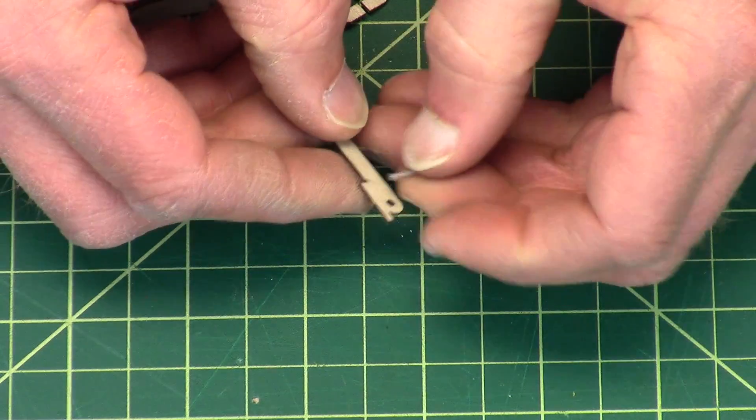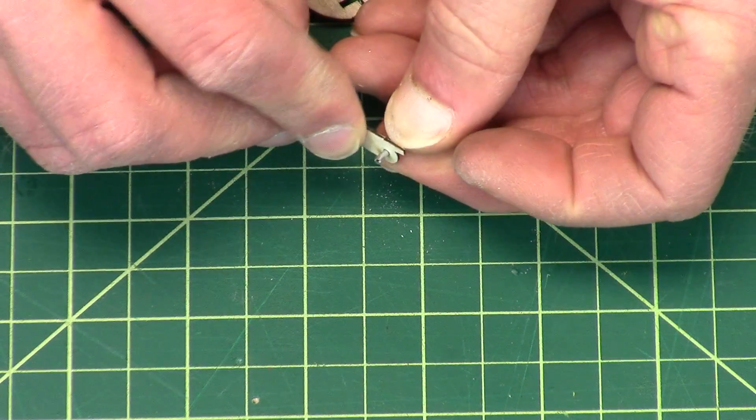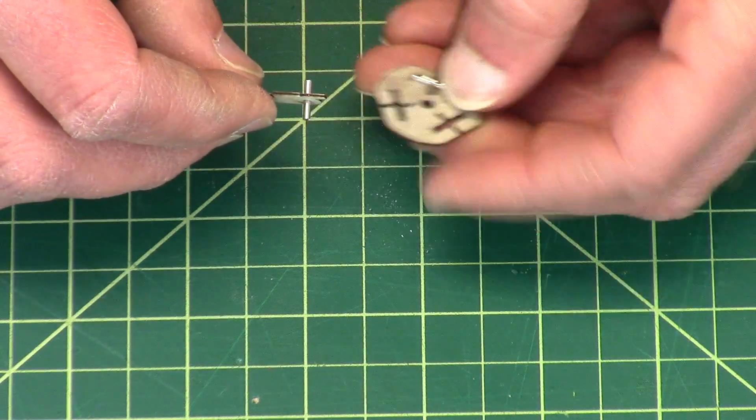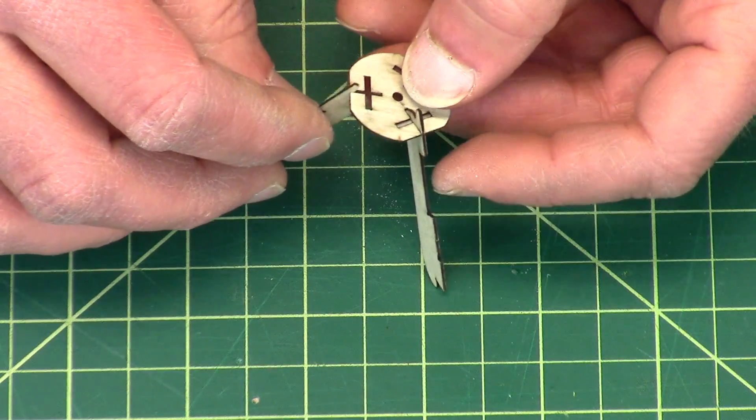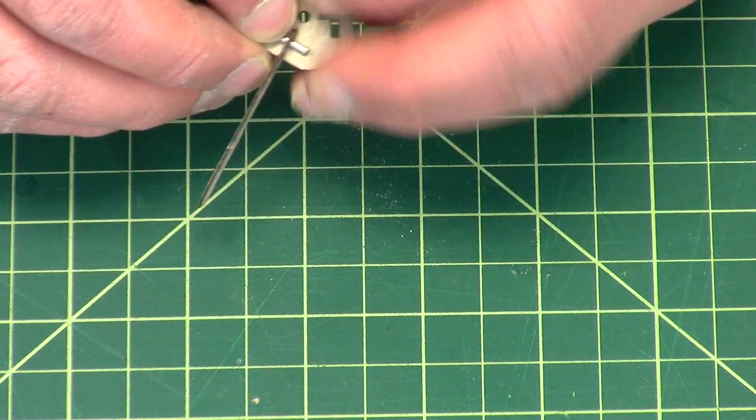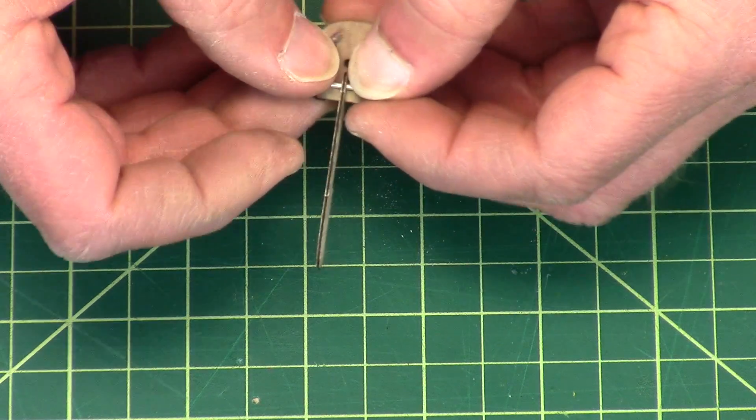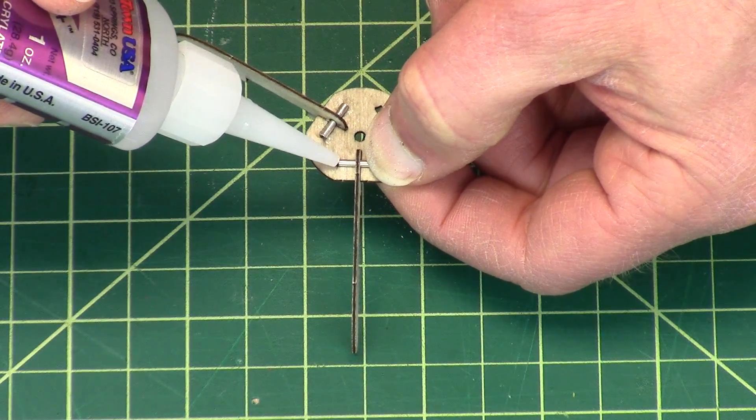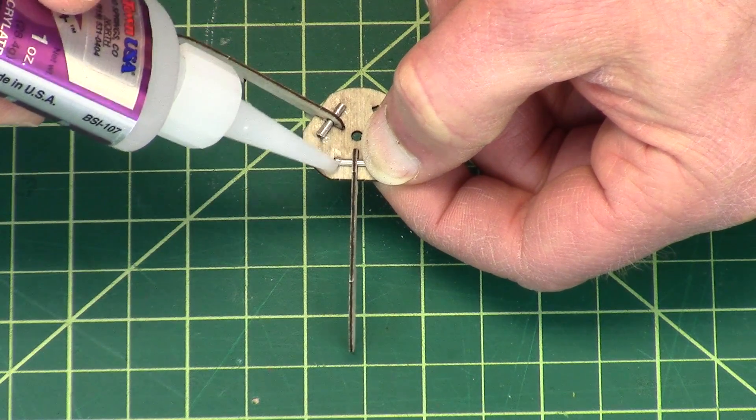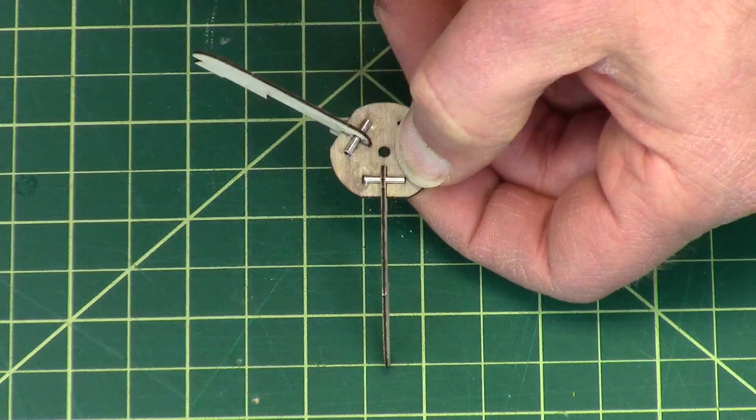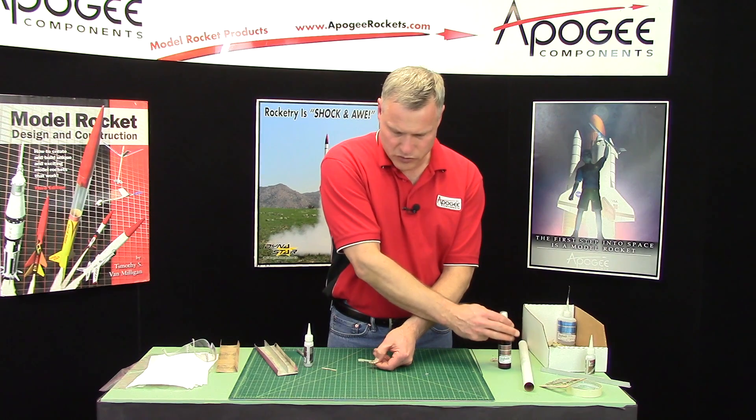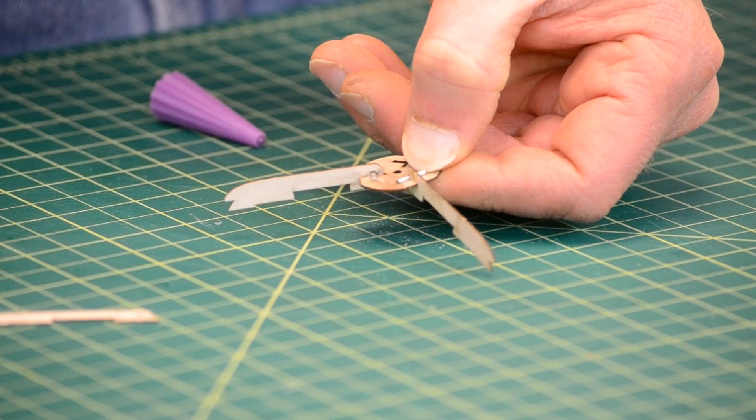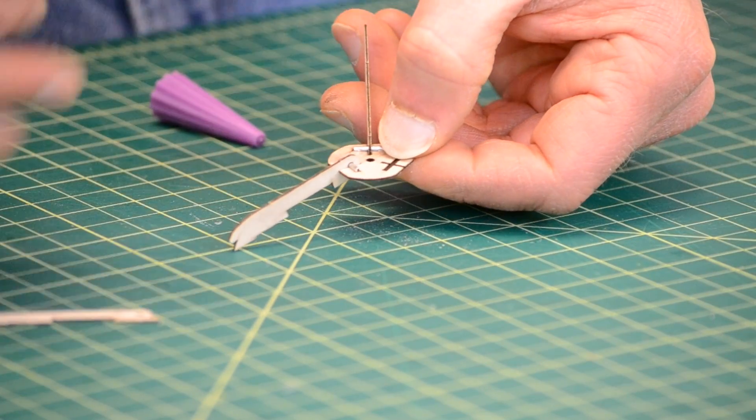The procedure is: put it through the hole, come in from the bottom side - this is my bottom side - come underneath, flip it over, and hit it with the glue right there. Just a drop of the accelerator to lock it in place.